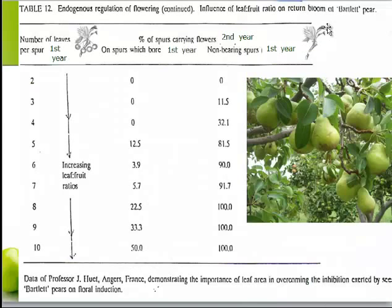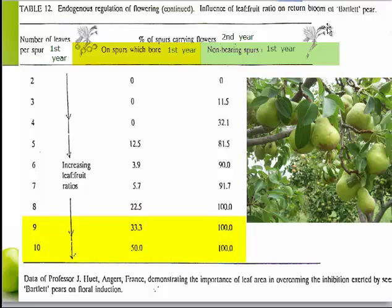Similar to apple and pecan, in pear, auxins and gibberellins in seed can inhibit bloom the following year. However, data indicate that increased leaf area per fruit can overcome some of the inhibition caused by the seed. Here is a table looking at the influence of leaf-to-fruit ratio on return bloom in Bartlett pear. What we see is that if the number of spur leaves was 9 or 10 the previous year, then many spurs flowered the following year, both on spurs that bore fruit and did not bear fruit. Thus, increasing the amount of carbohydrates available to flower buds can increase flowering the next year.